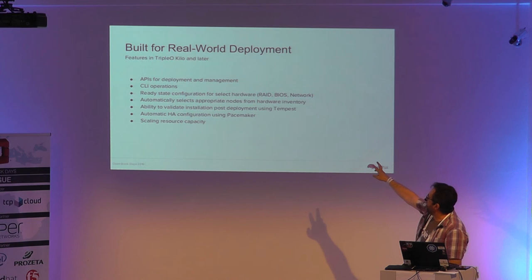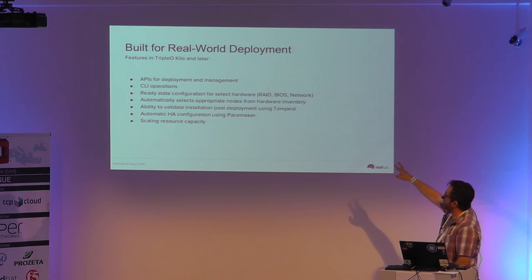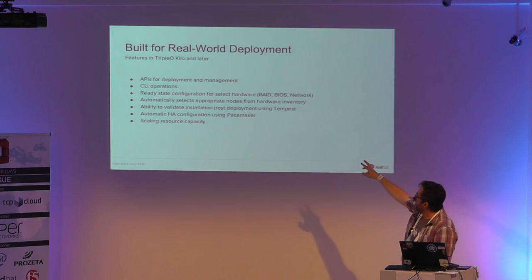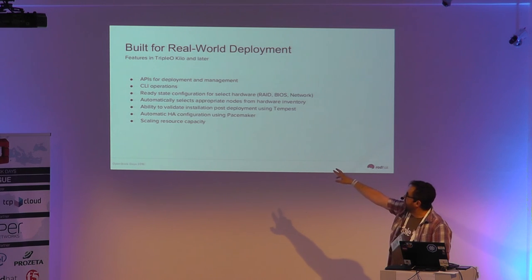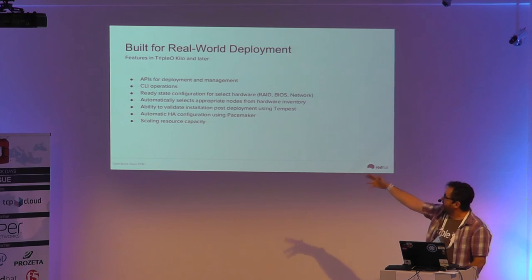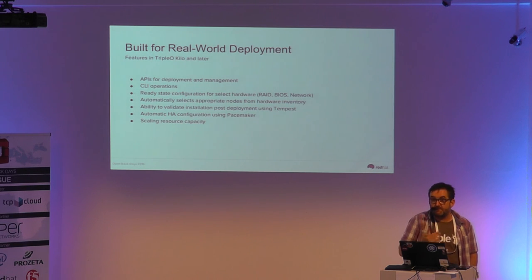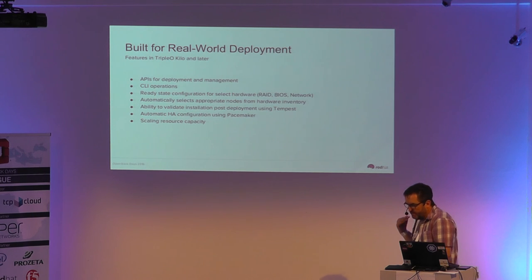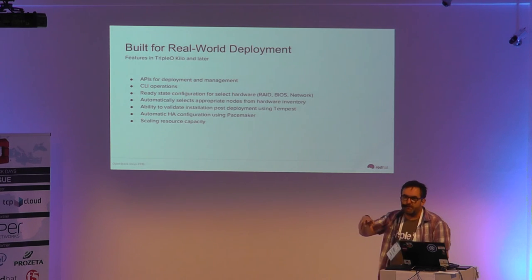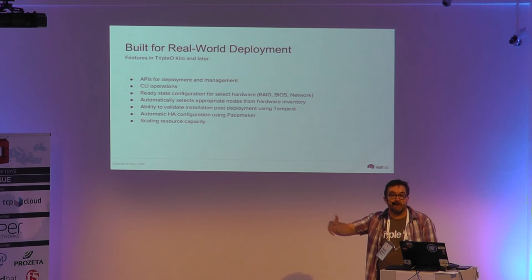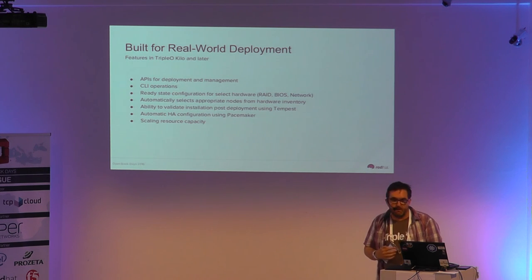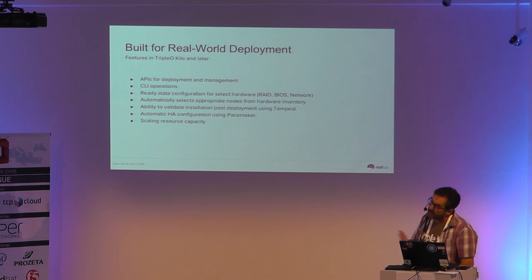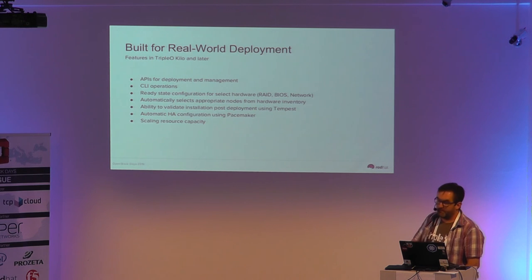We also have hardware matching — selecting machines out of the inventory based on capabilities — post-deployment validation, HA configuration with Pacemaker, and scaling resource capacity as a day-two operation. That day-two scaling uses the Undercloud to update the Heat stack to make the cloud bigger. The same thing can be done to shrink it if you want to remove nodes.